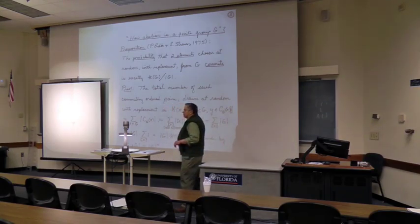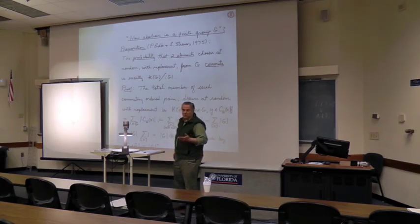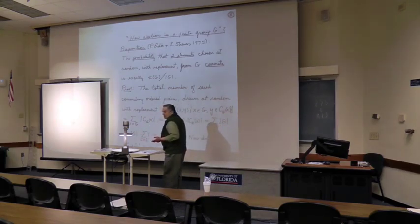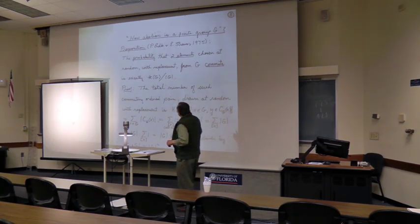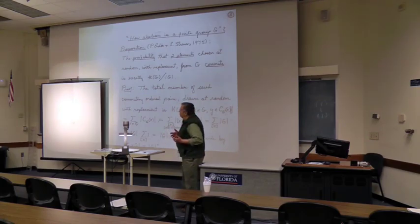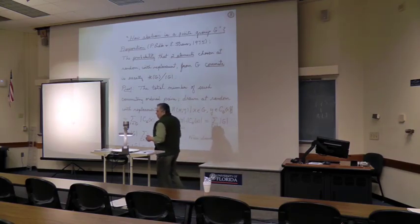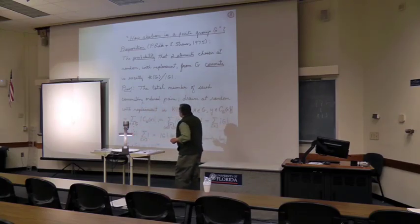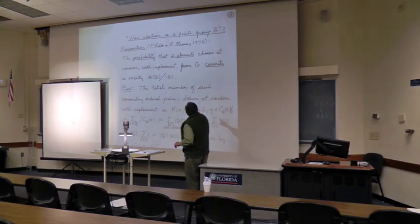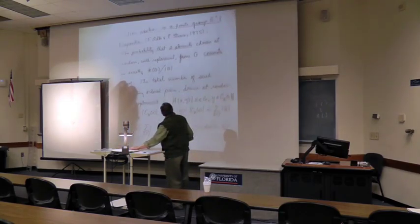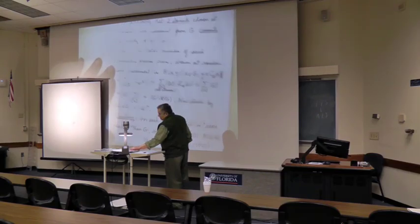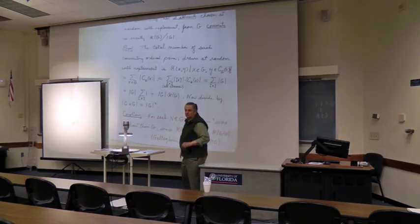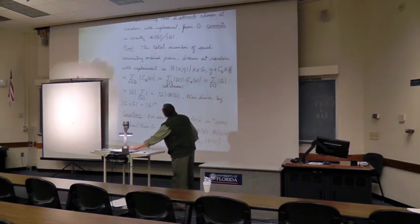If you remember what I told you to remember before, K of G over G is less than or equal to K of N over N times K of G mod N over G mod N. What you have here is that the factor group is more abelian than the group, because the probability of two elements drawn at random commuting is higher in the factor. The total number of such commuting ordered pairs, and I'm giving you a proof now.